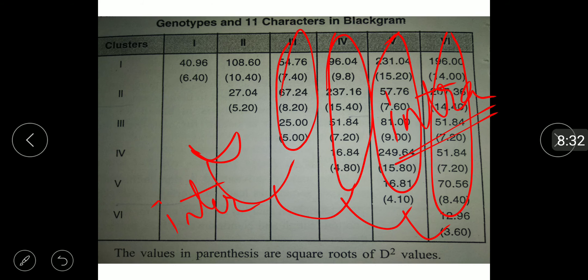D-square has been widely used in assessing variability between crops like maize, sorghum, pearl millet, wheat, linseed, etc.